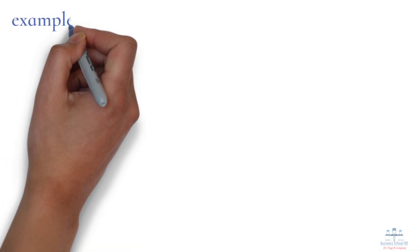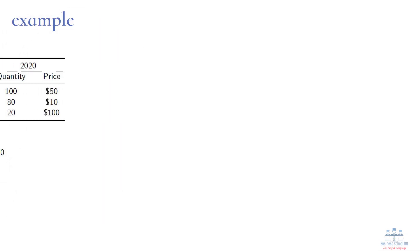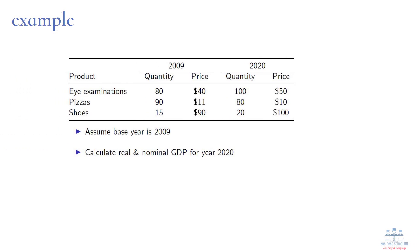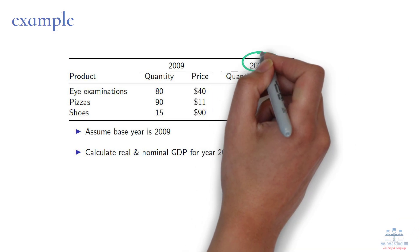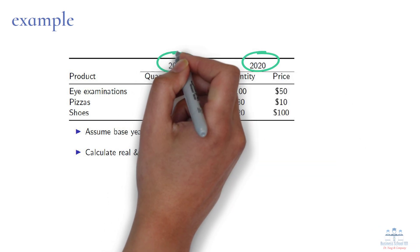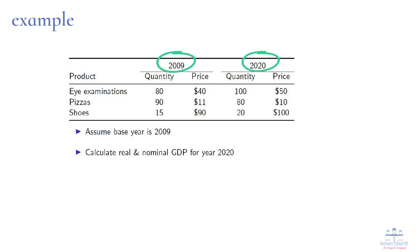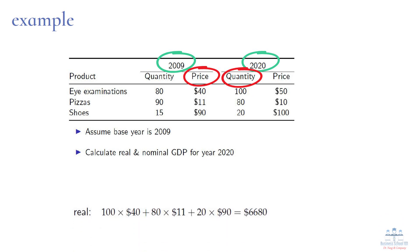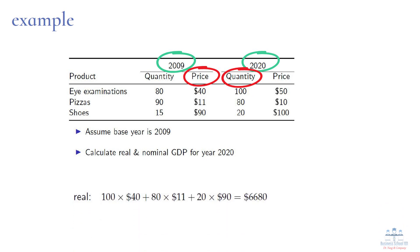Let's use the previous example to make it concrete. Suppose a very simple economy produces only eye examinations, pizzas, and shoes. We'll use this information to compute real GDP for the year 2020, assuming the base year is 2009. Remember that real GDP is the value of all final goods and services evaluated at base year prices. So we calculate the values of the three goods and services using the quantities for 2020 and the prices for 2009. Then, like nominal GDP, we add up the values of eye examinations, pizzas, and shoes, which gives a $6,680 real GDP for this example economy.